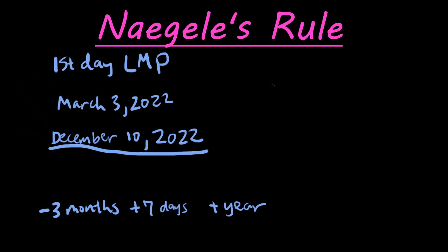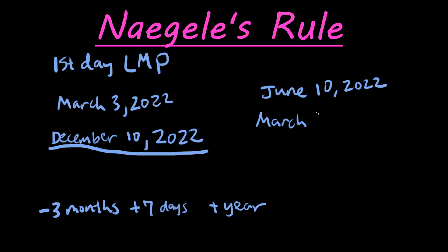Let's do another example. Let's say they tell us it is June 10th, 2022. Following the same rules, we're going to subtract 3 months. So June going back is May, April, March. Then add 7 days, giving us March 17th.